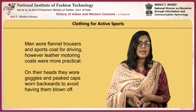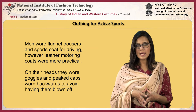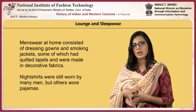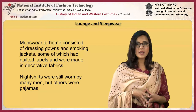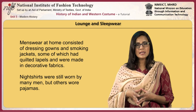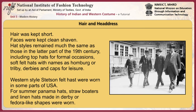Leather motoring coats were more practical for driving. On their heads, men wore goggles and peaked caps worn backwards to avoid having them blown off. Men's wear at home consisted of dressing gowns and smoking jackets, some with quilted lapels made in decorative fabrics. Night shirts were still worn by many men, but others wore pyjamas. Hair was kept short and faces clean-shaven. Hat styles included top hats for formal occasions, soft felt hats named Homburg or Trilby, Derbys and caps for leisure, and western-style Stetson felt hats in some parts of the USA. For summer, Panama hats, straw boaters, and linen hats made in Derby or Fedora-like shapes were worn.